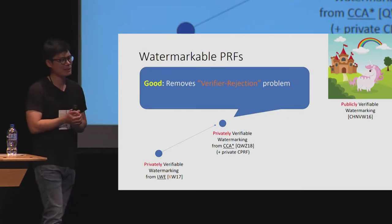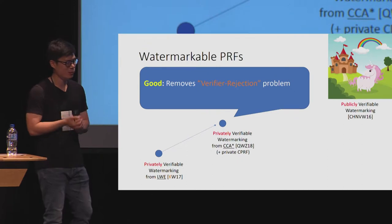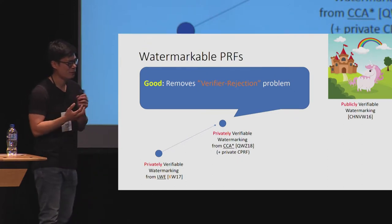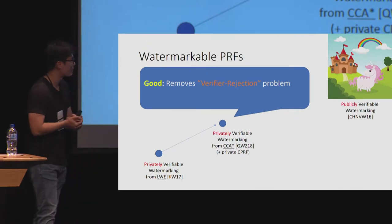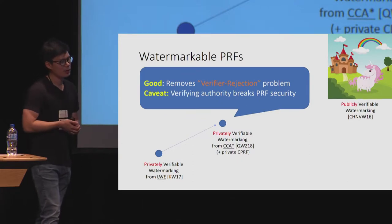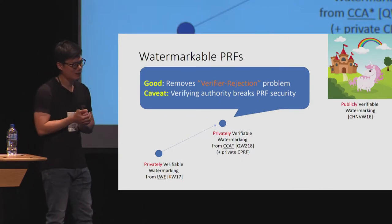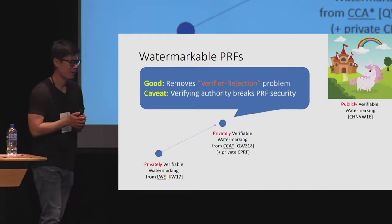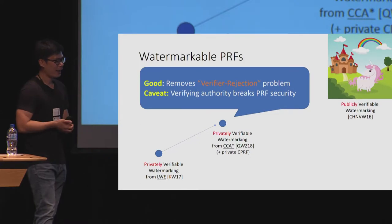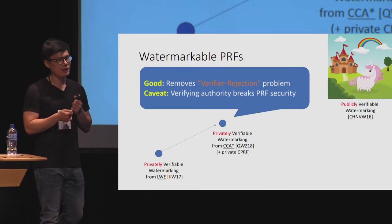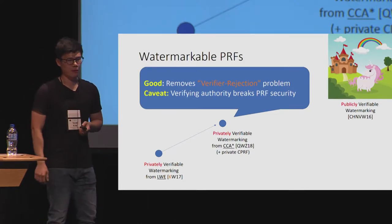The QWZ construction basically completely removed this verifier rejection problem from the original Kim-Wu construction, which is really nice. The construction is also quite simple and clever, so I encourage everyone to read their paper. However, the QWZ construction had some of its own caveats related to security against the verifying authority.